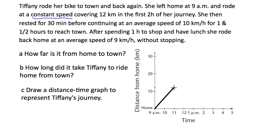She then rested for 30 minutes, so that's another horizontal line. 30 minutes is halfway to 11:30, and that means a straight horizontal line across from here to here.